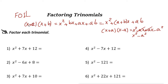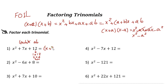Starting with the reverse of FOIL: x squared plus 7x plus 12. We know that 7 is (a + b) and 12 is (a times b). So we're looking for two numbers that multiply to 12 and add to 7. Factoring 12: 1×12, 2×6, 3×4. Since 3 + 4 = 7, the answer is (x + 3)(x + 4). Using FOIL you get x squared plus 7x plus 12.